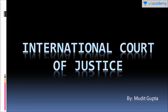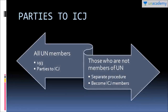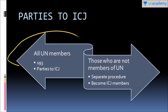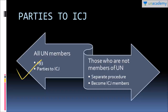All UN members are ipso facto - that is, automatically - parties to the International Court of Justice. Currently, the UN has 193 members, so all 193 countries are parties to the ICJ. However, if some country is not a member of the United Nations, it can still become a party to the ICJ by following a separate procedure mentioned in the statute of the International Court of Justice.